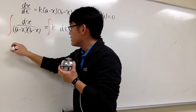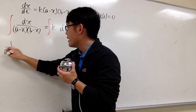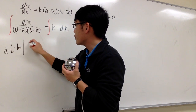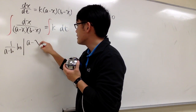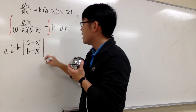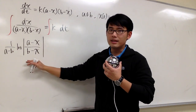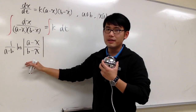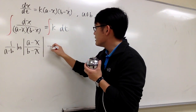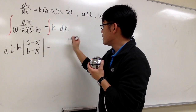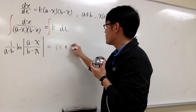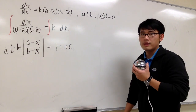The answer for the left-side integral is 1 over (a minus b) times ln of the absolute value of (a minus x) over (b minus x). I'm not going to put a constant on this side, because I just need a constant on the right-hand side. The right side is the integral of k dt, which is just kt, plus c1.